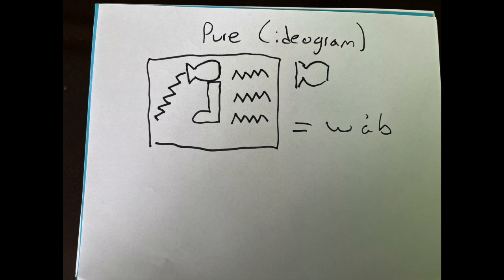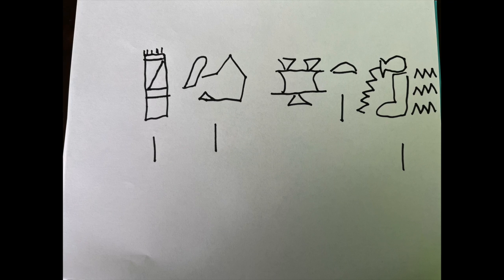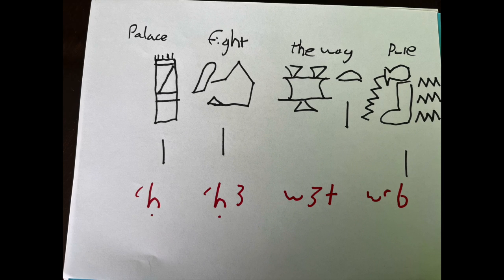All right, so here are the ideograms that we went over today: palace, fight, the road or the way, and pure—ah, aha, wa'at, and wa'ab. So these are your flashcards for this week. Write them down, work on them, work on glyphing, and remember, when you're doodling them, doodle with purpose.